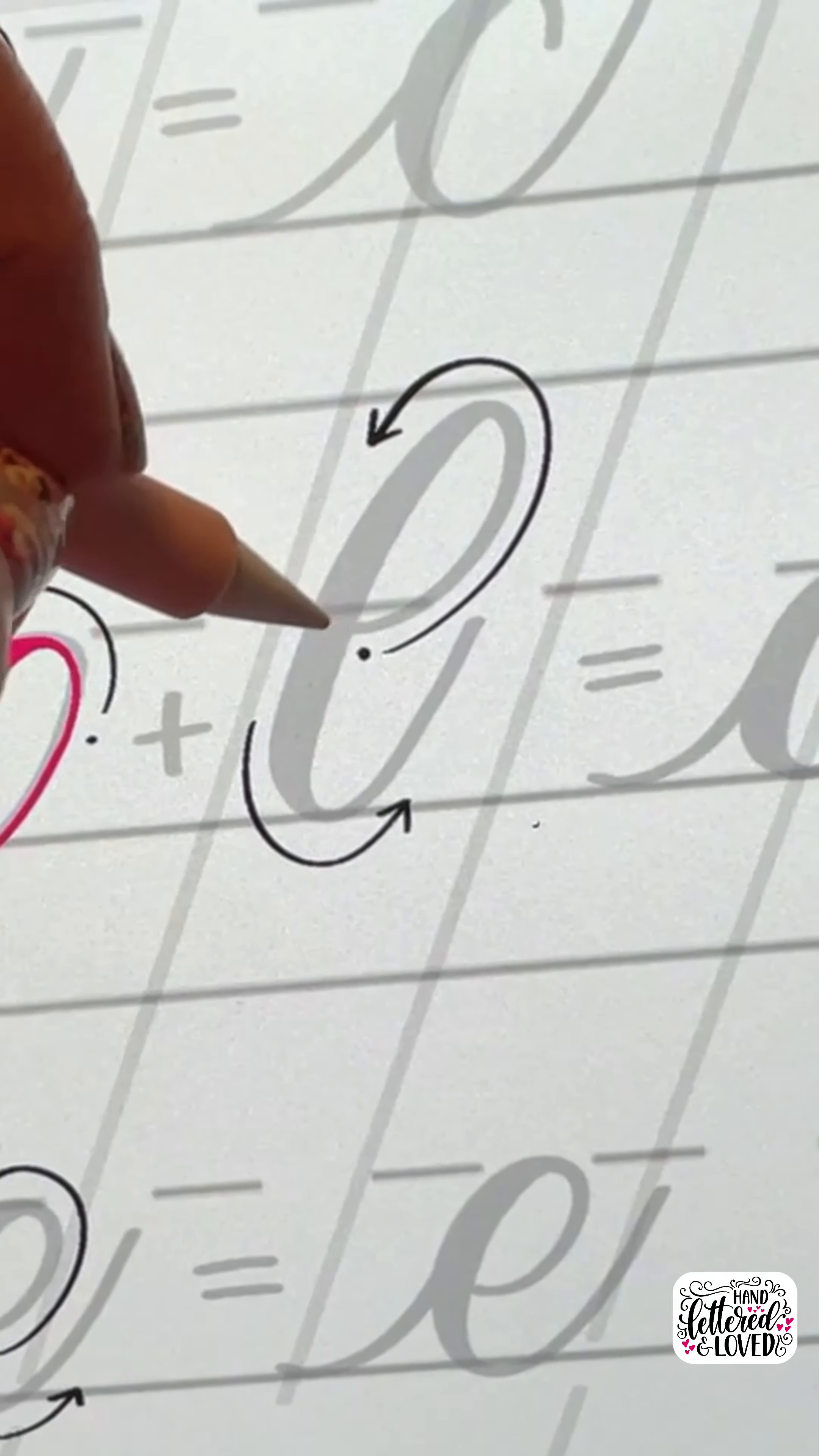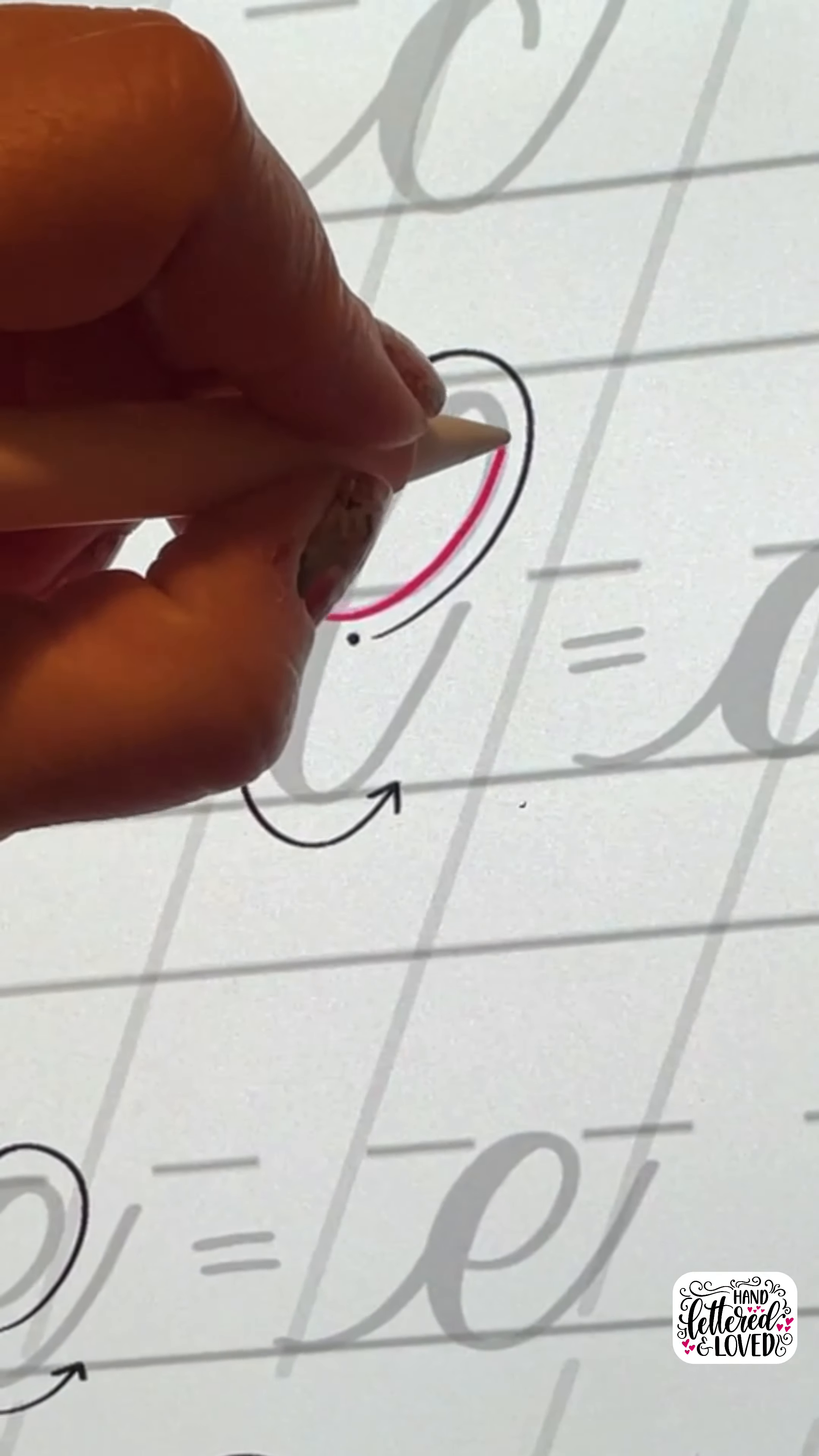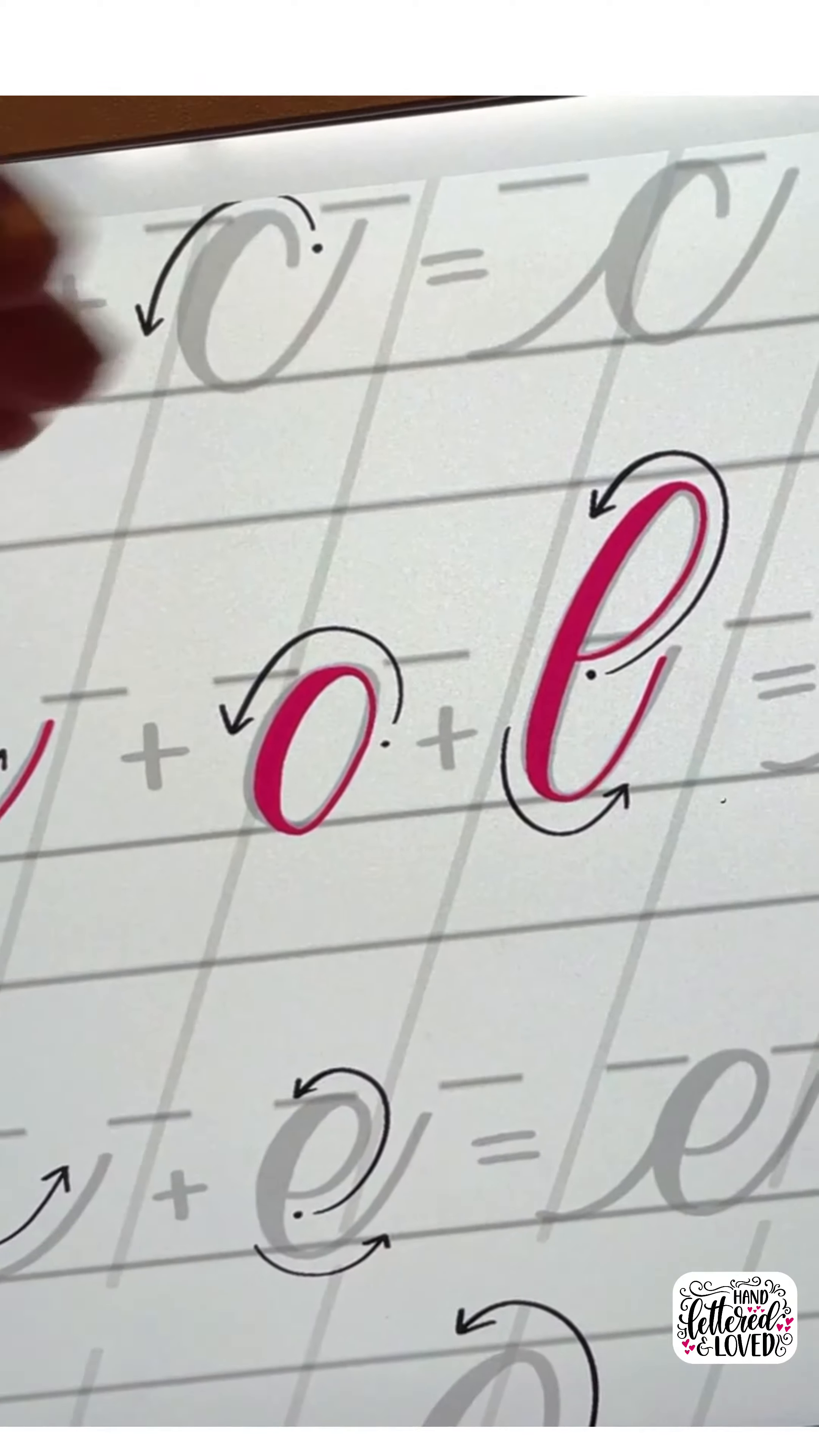And then lastly, we are going to do the ascending loop, which is the end of the d. So let's start here, come around, you can transition into your thick and back up. And those are the three strokes that make up the letter d.